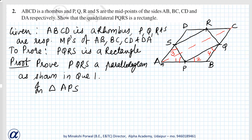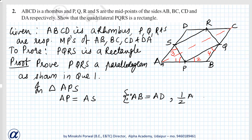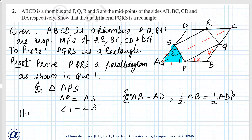If ABCD is a rhombus, then all its sides are equal. So AB equals AD. Since AB equals AD, half AB is also equal to half AD. So AP equals AS. In triangle APS, since AP and AS are equal, it is isosceles, so angle 1 equals angle 3. Similarly, in the other triangle, BP and BQ are equal, so angle 2 equals angle 4.